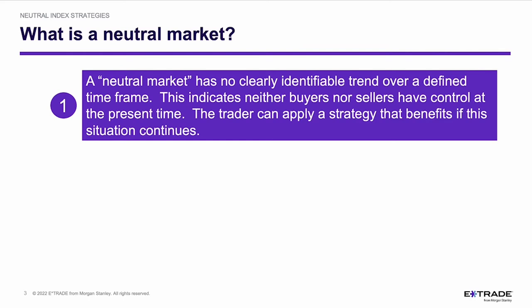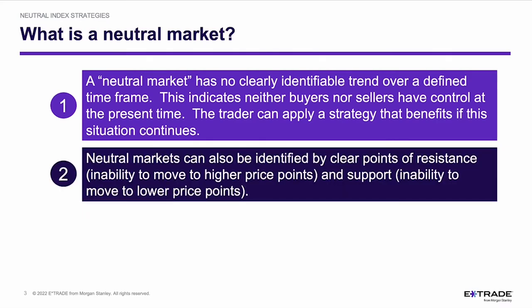The challenge is to determine how long the situation is going to continue. A neutral market can also be identified by clear points of resistance — that's the inability to move to higher price points — and support, the inability to move to lower price points. When we look at a chart, resistance is considered a ceiling, and support is considered a floor.